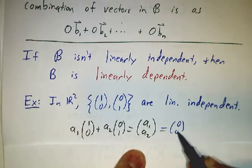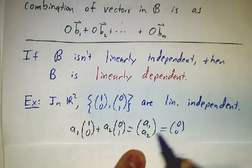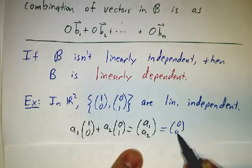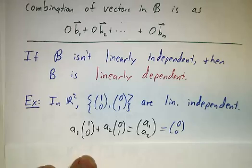And if that's the 0 vector, then a₁ had to be 0 and a₂ had to be 0. So these are linearly independent.